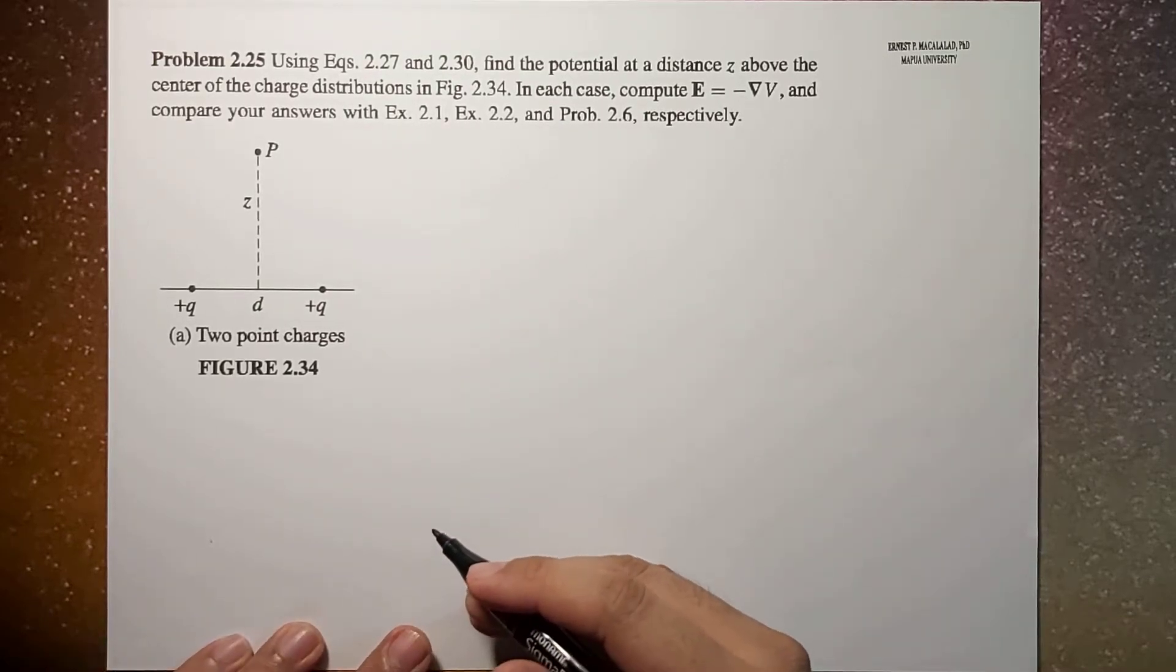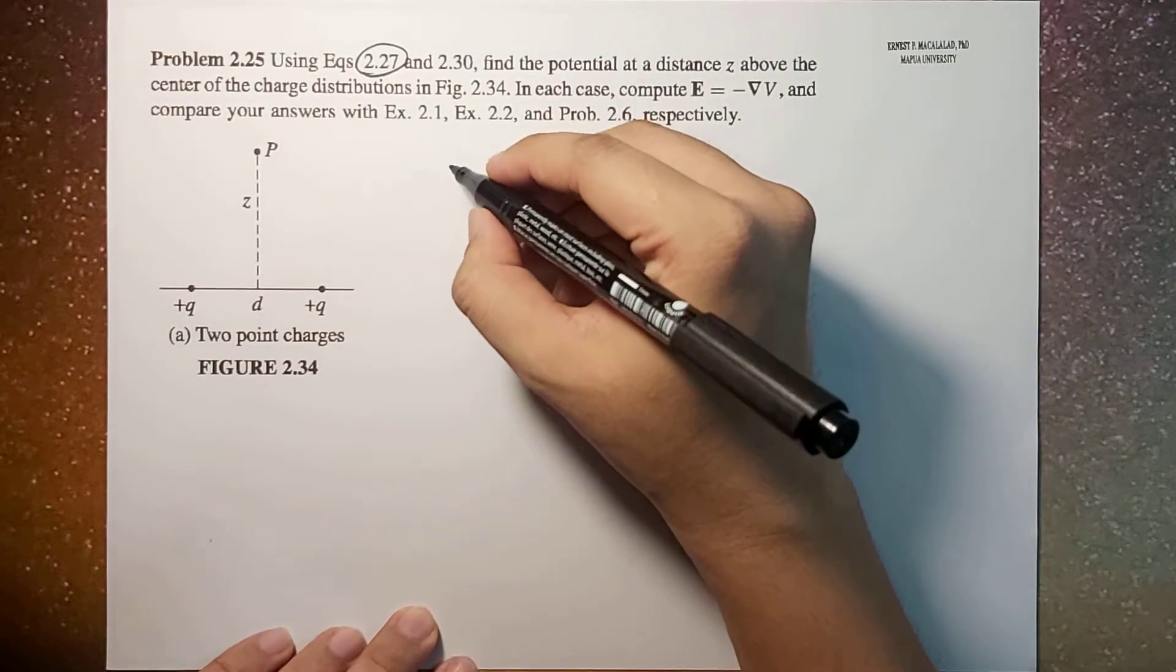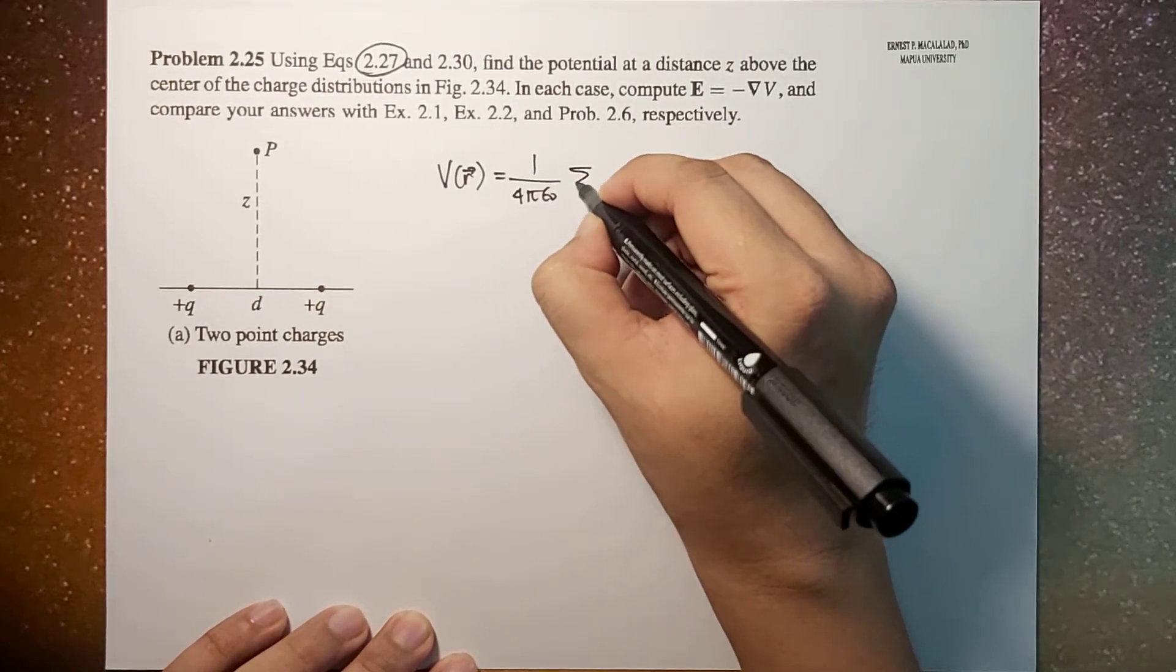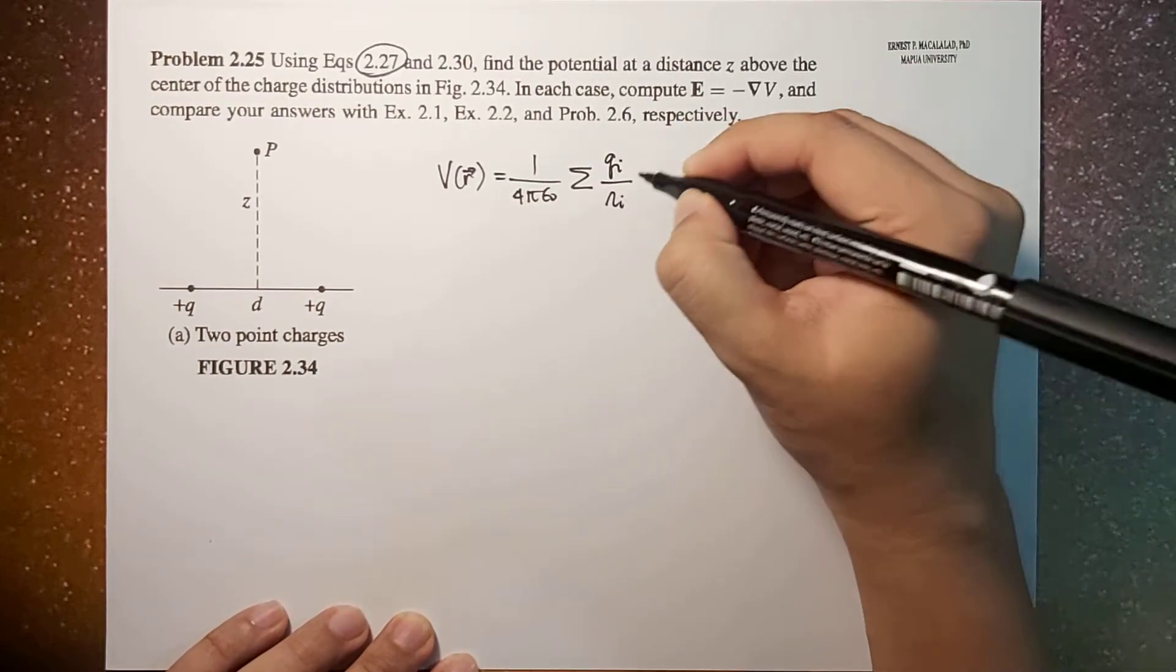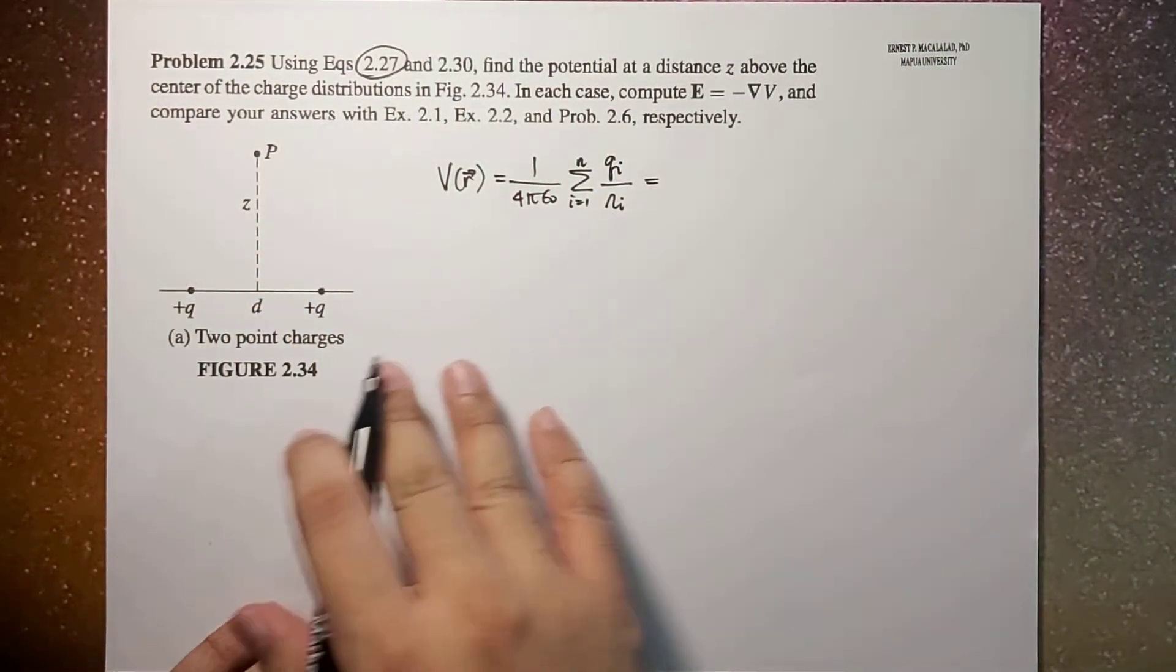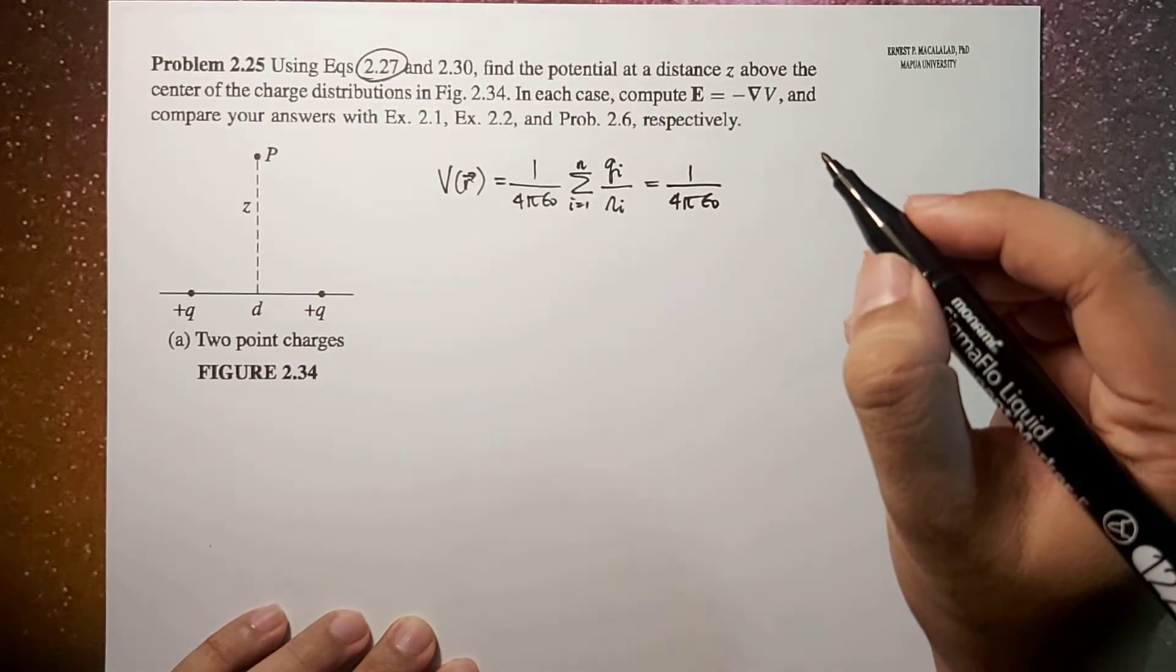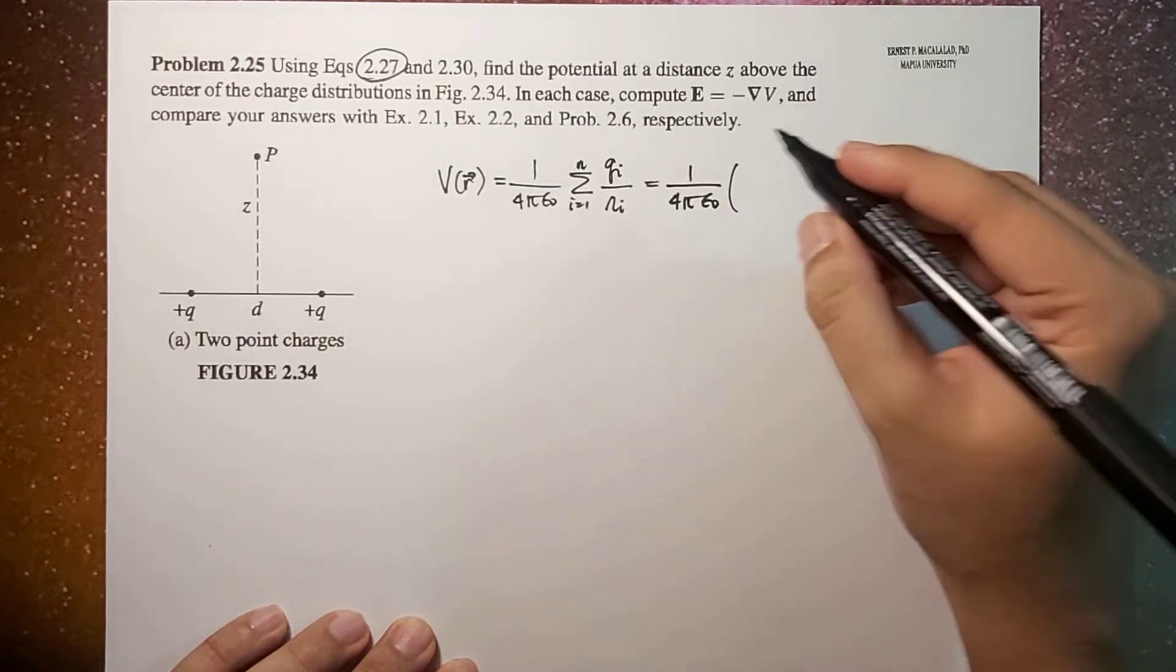we are going to use equation 2.27, where equation 2.27 states that the potential at a certain point R is equal to 1 over 4 pi epsilon naught times the sum of QI over RI, where I equals 1 to N. So in this case, this will now be equal to 1 over 4 pi epsilon naught times the sum of QI. Let's say this is left and right, so let's start with left.